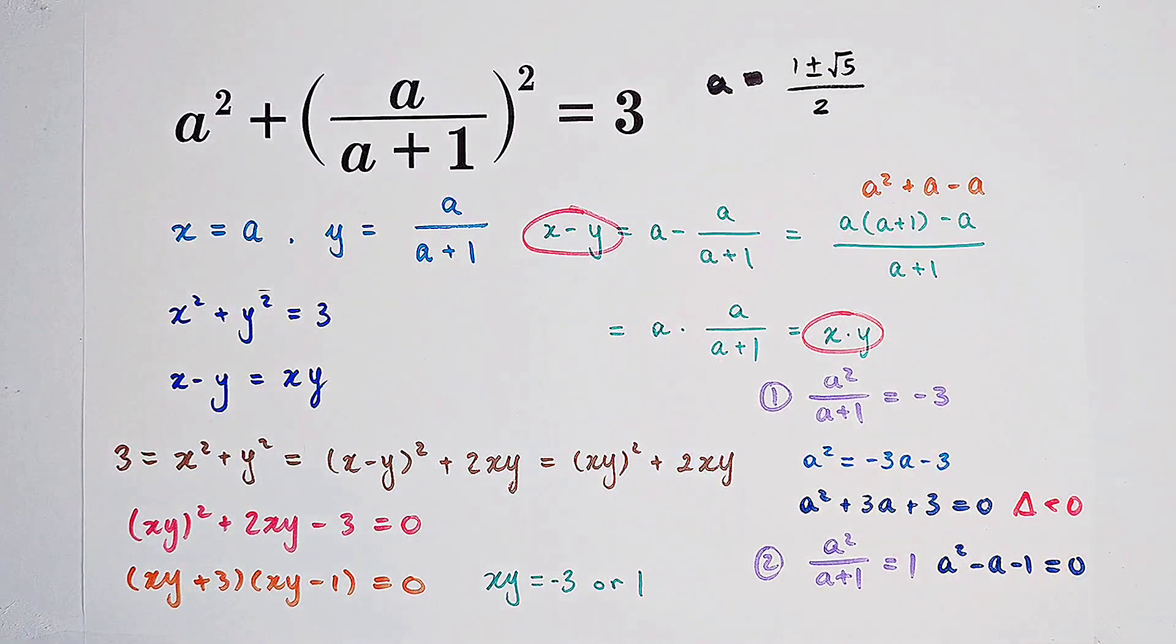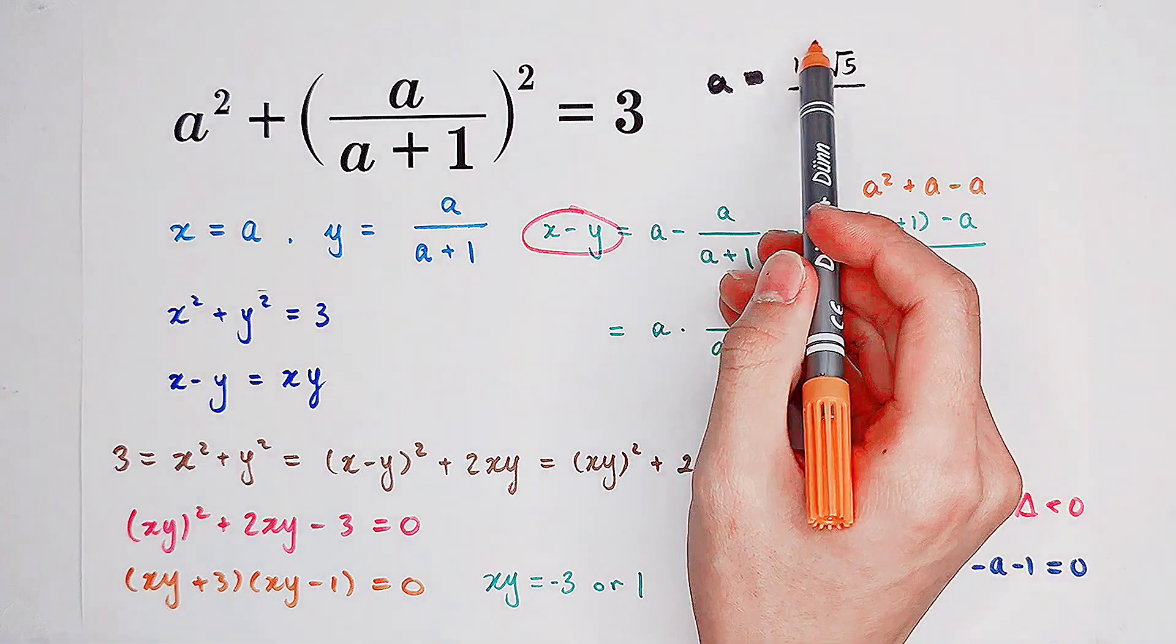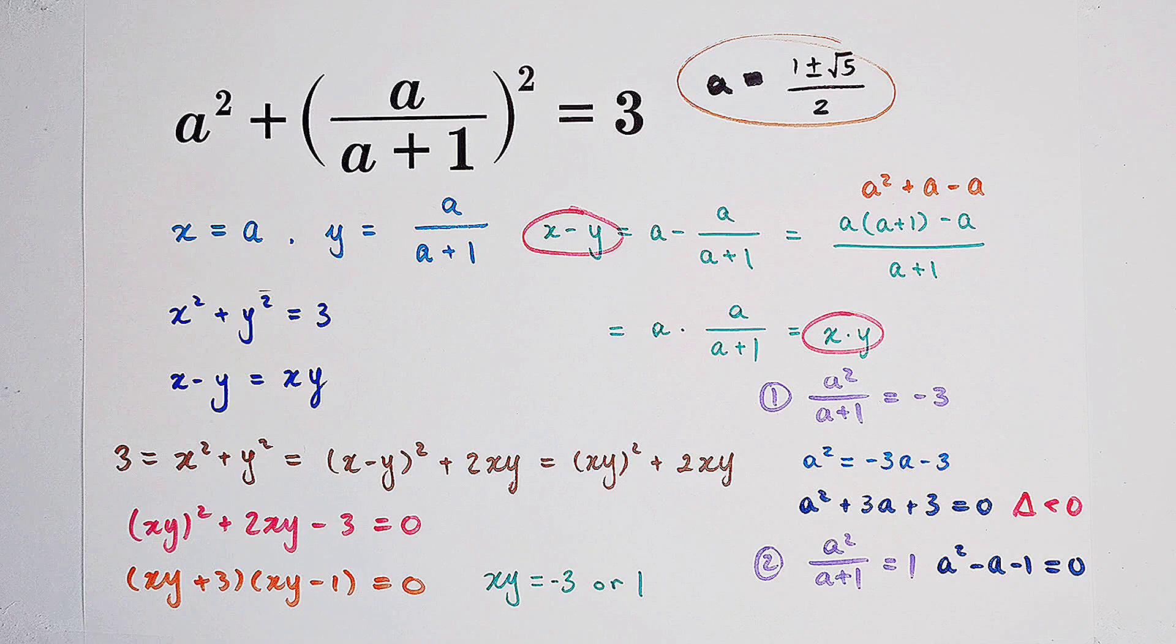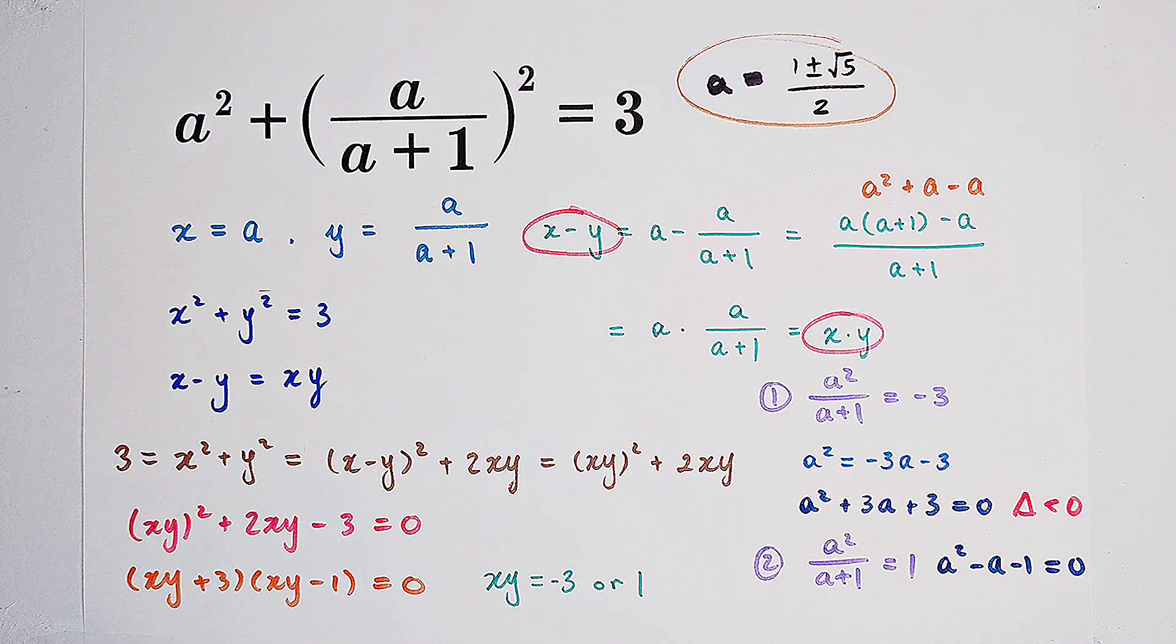So the two solutions are 1 plus or minus square root of 5 over 2. And these two solutions are the real solutions to this equation. Should you get them? Give me a thumbs up, subscribe to me for more wonderful questions, and we'll see you next time. Bye-bye!